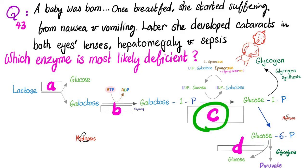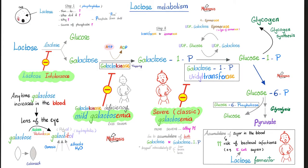Enzyme D converts glucose-6-phosphate into glucose — it removes a phosphate, so it's glucose-6-phosphatase, which is deficient in von Gierke's disease. But von Gierke's disease does not have cataracts. Von Gierke has hepatomegaly and fasting hypoglycemia, and is not brought about by breastfeeding. The one brought about by breastfeeding causing all these severe symptoms is galactosemia. Deficiency of galactose-1-phosphate uridyl transferase is the severe or classic galactosemia.